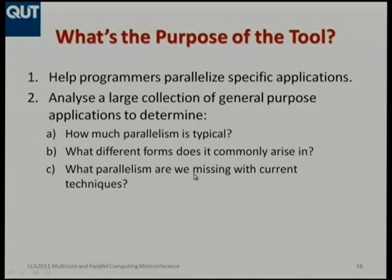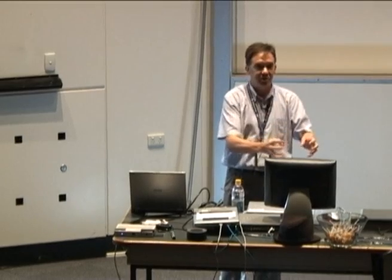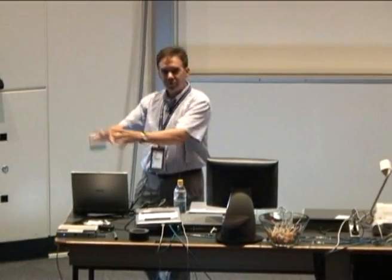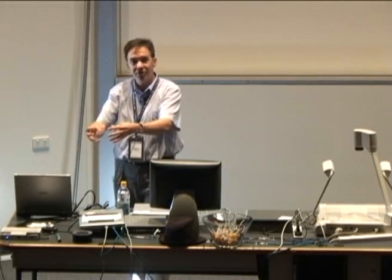The tool can certainly help programmers guide them in parallelizing specific applications. But from a research point of view, I'm perhaps more interested in an alternative use where I'm not trying to parallelize a particular application, but I pump in every open source program — Java, C#, C++, whatever I can find across all sorts of genres — and simply measure how much parallelism I typically find. Is it in loops, is it recursion, is it map-reduce parallelism, is it coarse-grained or fine-grained, does it fit patterns we already know, or do we need to develop new analysis and new parallelization techniques? I'm hoping to use this as a meta-research tool to measure the actual true parallelism in a whole range of programs, which will help us better understand the task of parallelization generally.